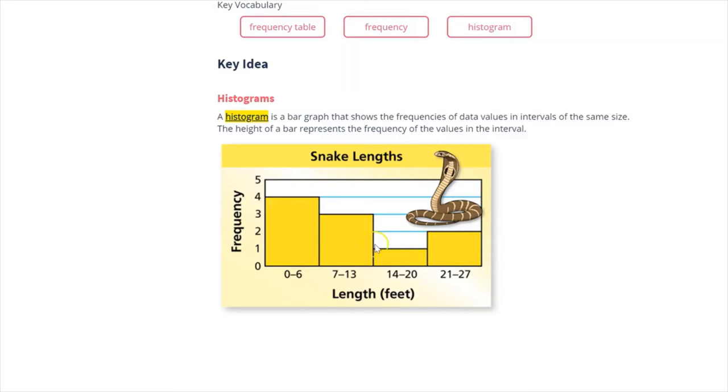For example, this one here is showing snake lengths, and we can see it's grouped length in feet: 0 to 6 feet, 7 to 13 feet, 14 to 20 feet, and 21 to 27 feet.